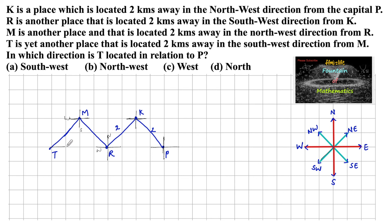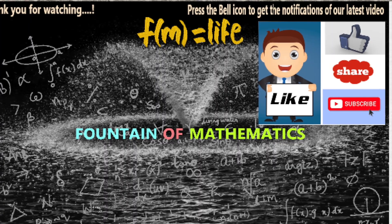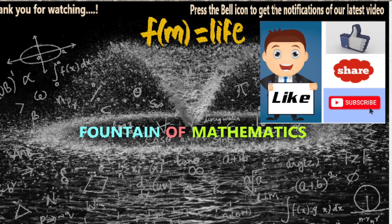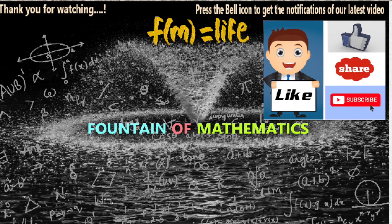Now, in which direction is T located with respect to P? We can see that T and P are located on the same line. With respect to P, T is exactly in the west direction. So the answer is option C. Please like, share, subscribe and support us. Thank you.